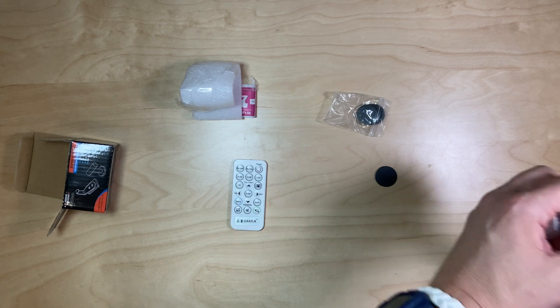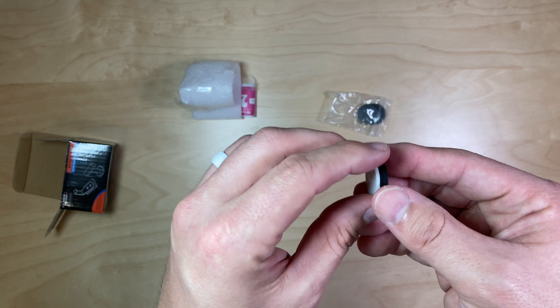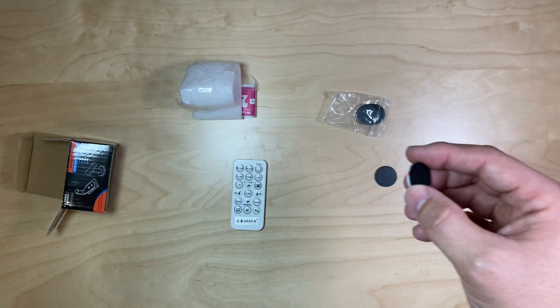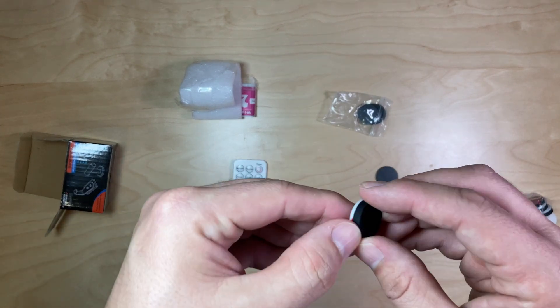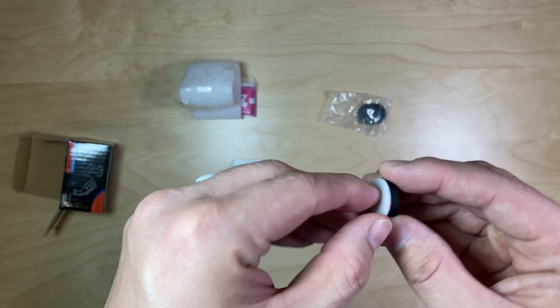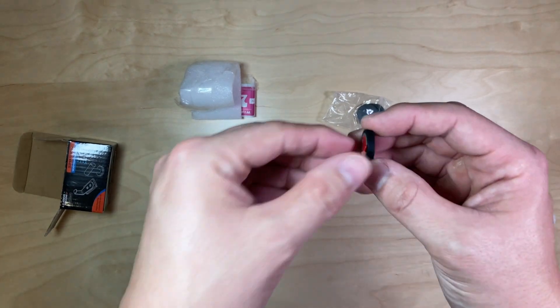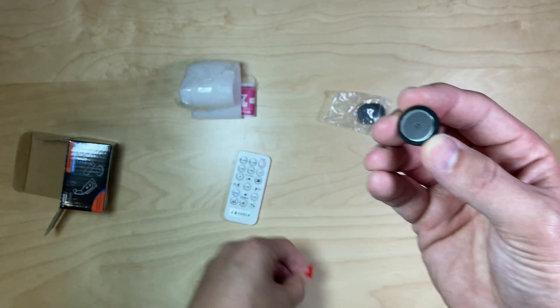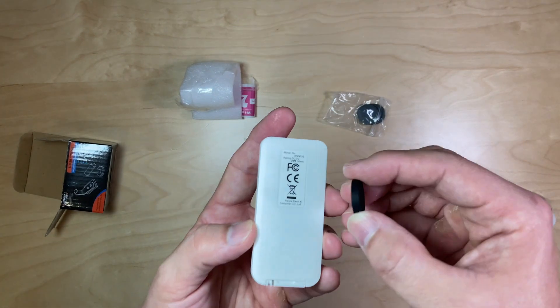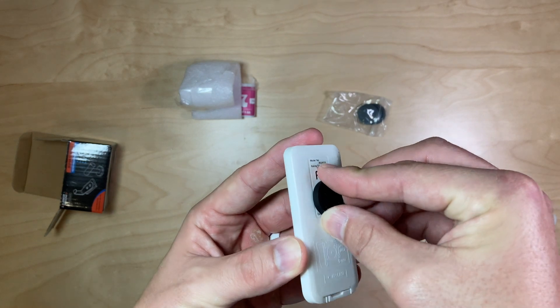I'll just kind of take this off here. Here's magnet two. And then what you'll do is you'll take this off, peel this off like so, and then peel off the little 3M tape and put it on the back of the remote.